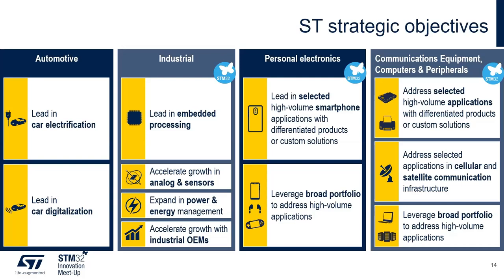Looking at ST's strategic objectives, we address four main markets: automotive, industrial, personal electronics, and communication equipment and computers. STM32 devices are not qualified for automotive, but address all other industrial and consumer markets. We have already delivered billions of STM32 devices for a multitude of applications including factory automation, sensors, graphic HMI, motor control, digital power, IoT devices, connected objects, wearables, medical monitoring, and artificial intelligence. All markets except automotive can be addressed with STM32.